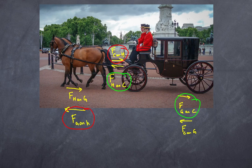In summary, Newton's third law involves two forces that are equal in magnitude, opposite in direction, but acting on different objects. What determines an object's acceleration is the net force acting on that object alone. Newton's third law deals with two forces acting on different objects — I hope that gives you a really clear understanding.